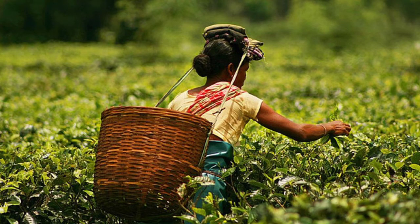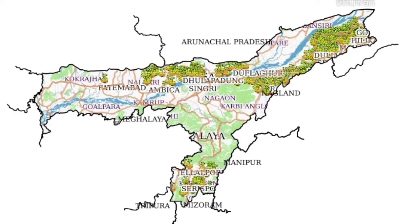You know that Assam is famous for tea. This region is the world's largest tea growing region by production, lying on either side of the Brahmaputra River.